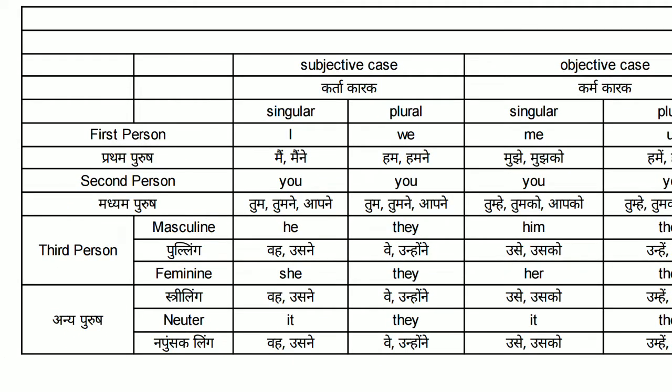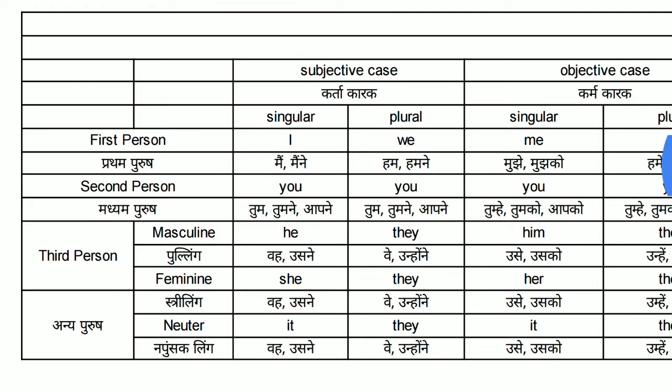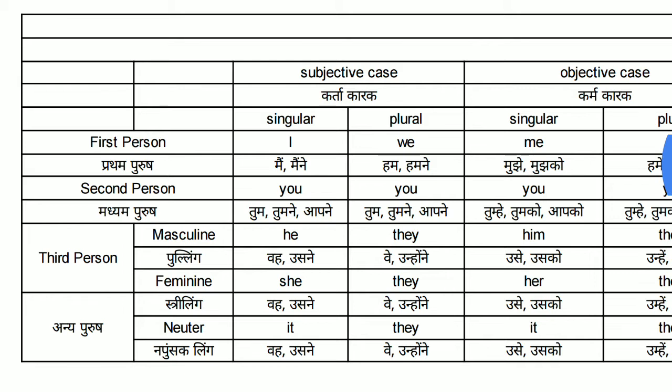Remember, children, there are three persons in English: first person, second person, and third person — Prathampurush, Madhyampurush, Anyapurush. First person and second person don't have different forms according to gender, but the third person has different forms according to gender. The speaker is the first person, the listener is the second person, and the person about whom the talk is going on is the third person.